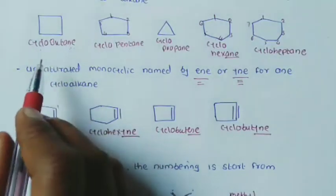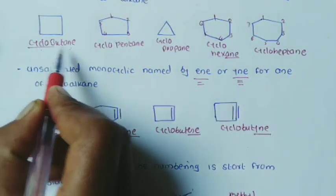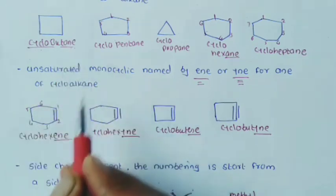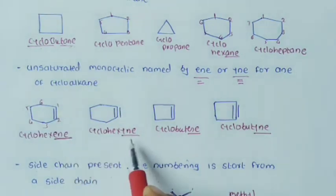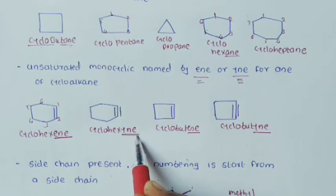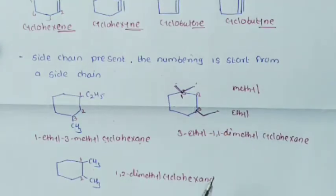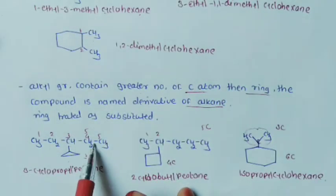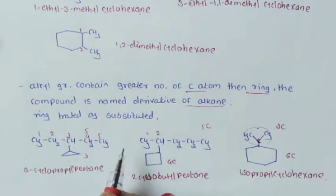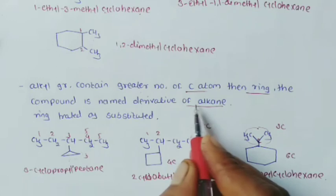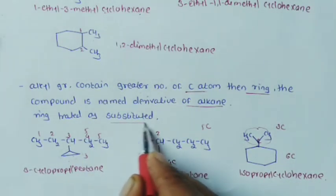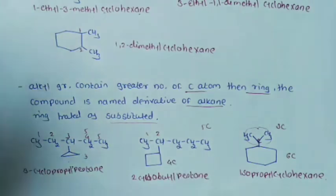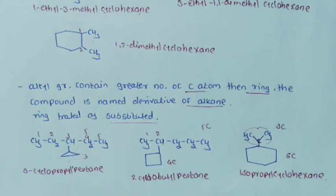To summarize the rules for simple monocyclic hydrocarbons: use the prefix 'cyclo' before the parent alkane name. If a double bond is present, use '-ene'; if a triple bond, use '-yne'. If a side chain is present, start numbering from the carbon bearing the side chain. If the alkyl group has more carbons than the ring, the ring is treated as a substituent on the alkane chain.